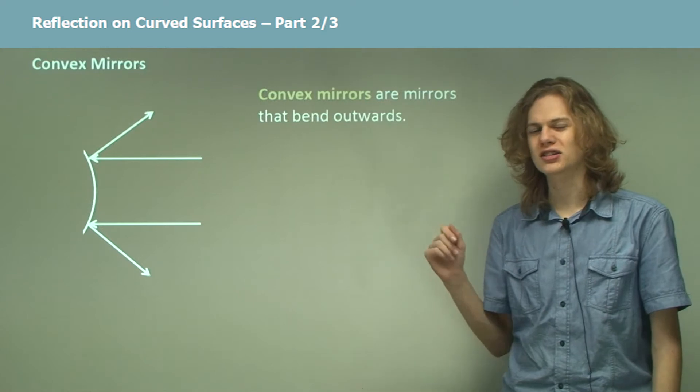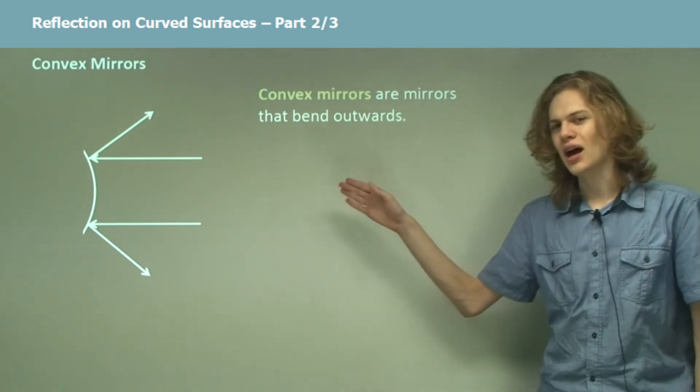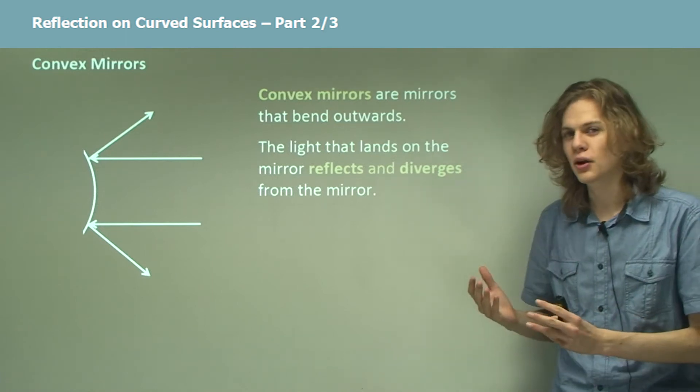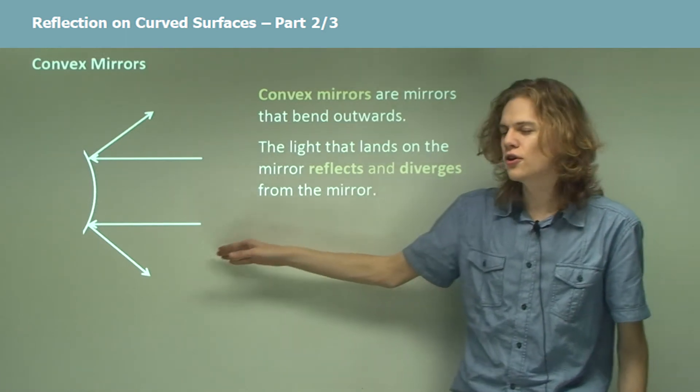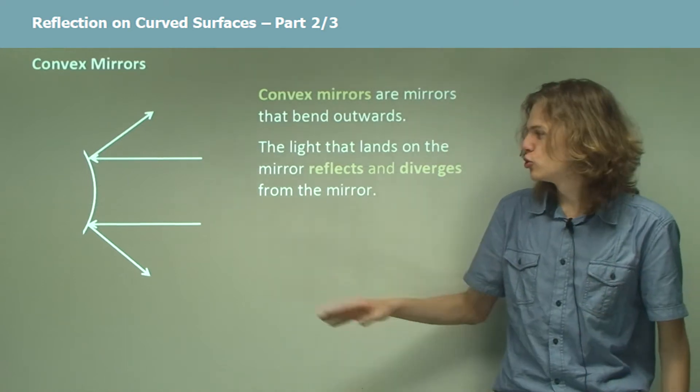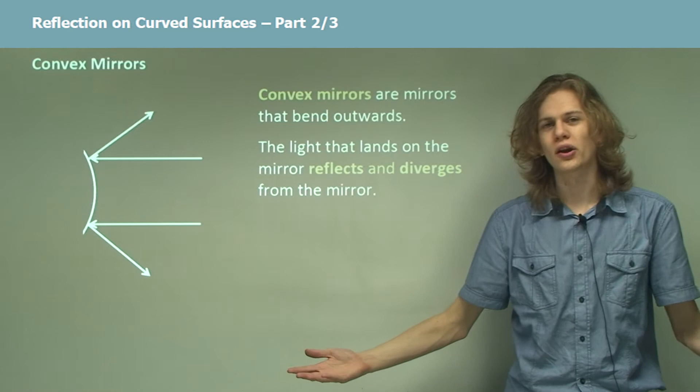This is called a convex mirror. These mirrors bend outward like the one in the diagram. Light that lands on the mirror will reflect and then diverge from the mirror. Remember that diverging means the two rays of light are moving apart from one another.